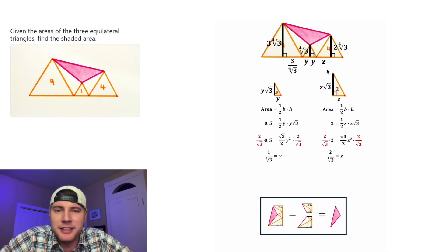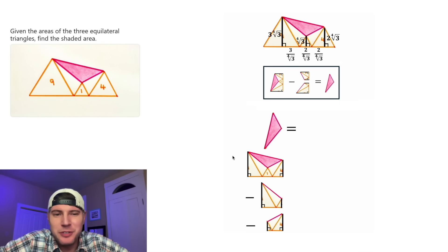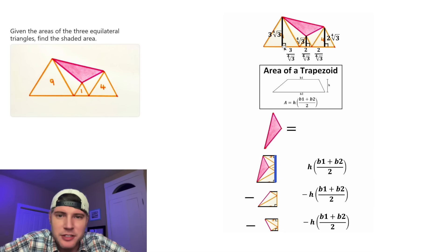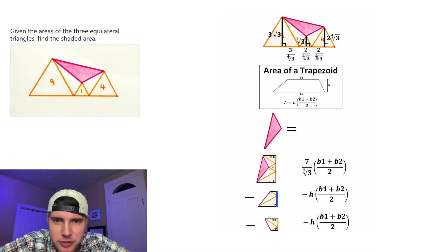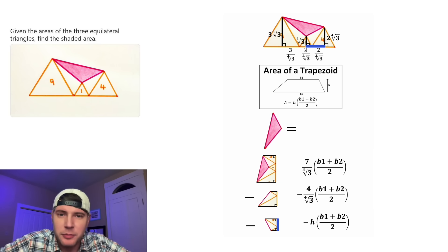Now we're ready to find the area of the pink triangle. It'll be this trapezoid minus this trapezoid minus this trapezoid. The area of a trapezoid equals the height times the sum of the top and bottom divided by 2. The height of the large trapezoid is all of this — adding up to 7 over the fourth root of 3. The height of the second trapezoid is 3 over the fourth root of 3 plus 1 over the fourth root of 3, which gives 4 over the fourth root of 3. The height of the bottom trapezoid is 1 over the fourth root of 3 plus 2 over the fourth root of 3, giving 3 over the fourth root of 3.